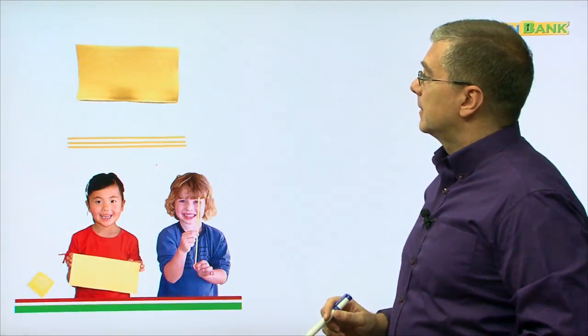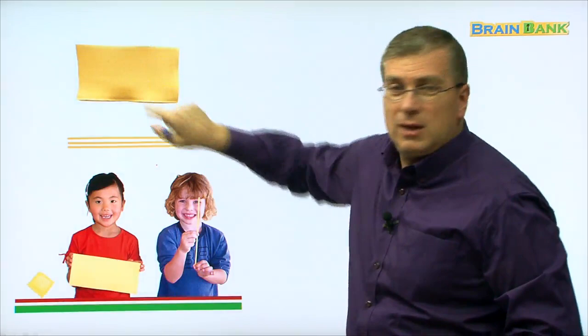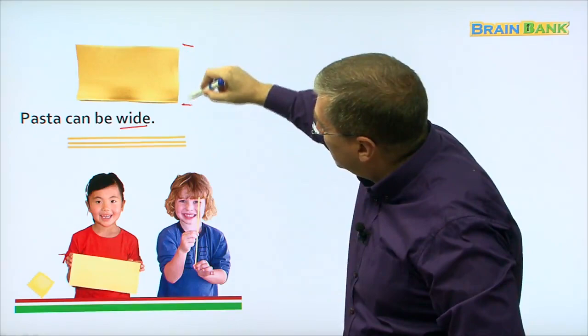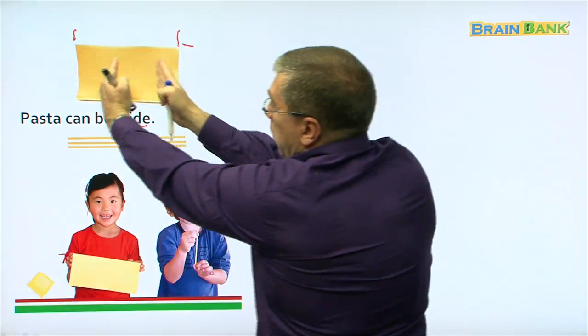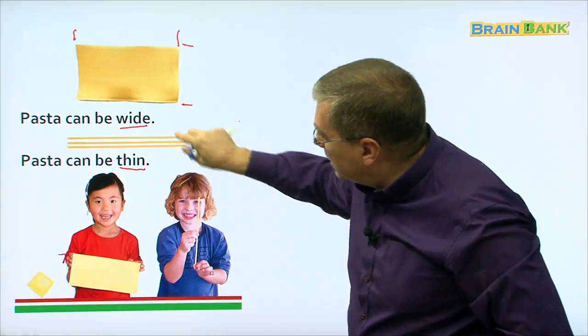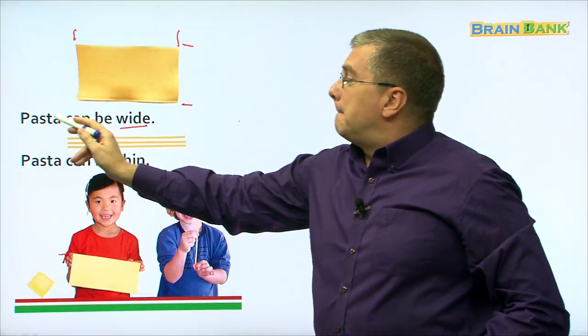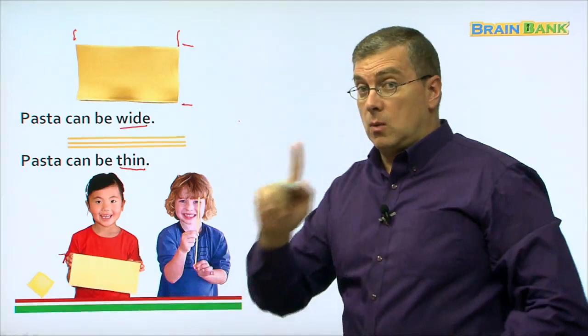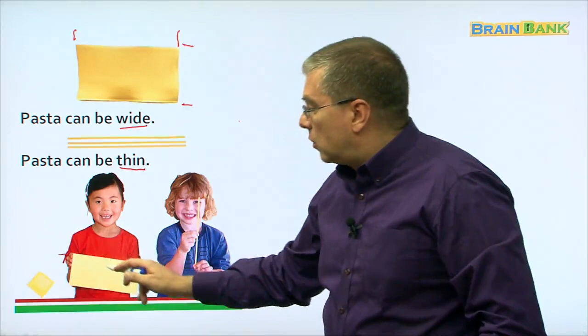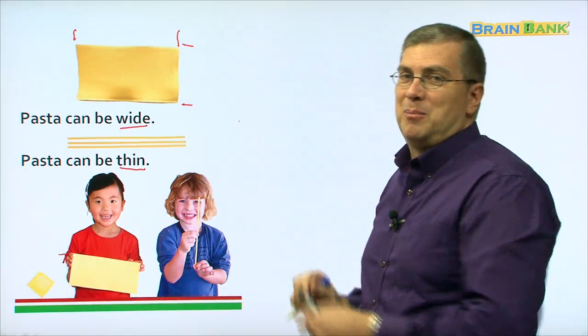Oh, this is interesting. Look at this pasta. What can we say about this pasta on top? It almost looks like a sheet of pasta, like a sheet of paper. We can say this pasta can be wide — either top to bottom or side to side, it's wide. This other pasta is thin. So pasta can be wide, or pasta can be thin. She is holding wide pasta; he is holding thin pasta.